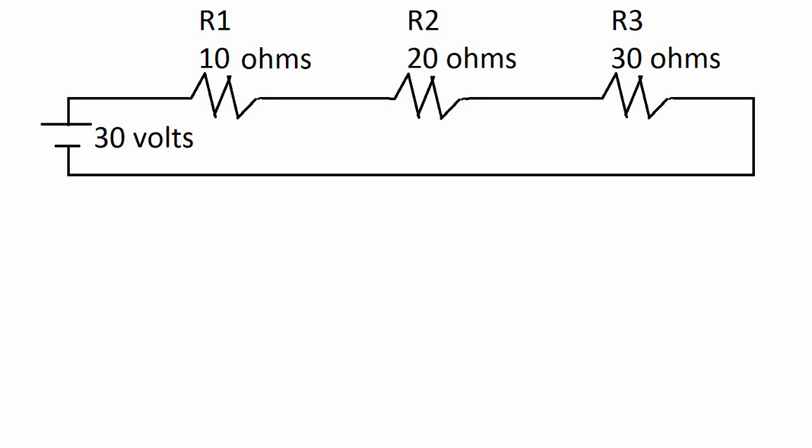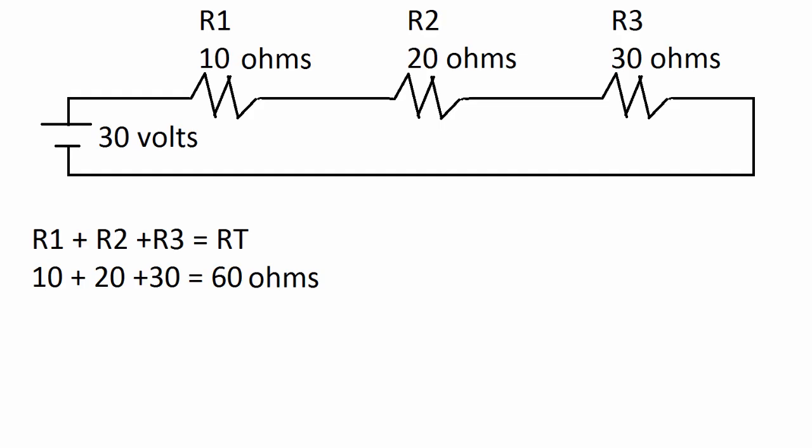In this one we have three resistors in series and 30 volts going to them. We want to find the current that goes through all these resistors and the voltage of each resistor.